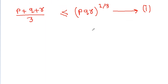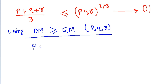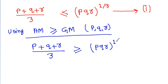Now, if we use AM greater than or equal to GM on p, q, and r, then we get AM equals (p plus q plus r) divided by 3, which should be greater than or equal to GM equals (pqr) to the power 1/3. Let's call this equation 2.